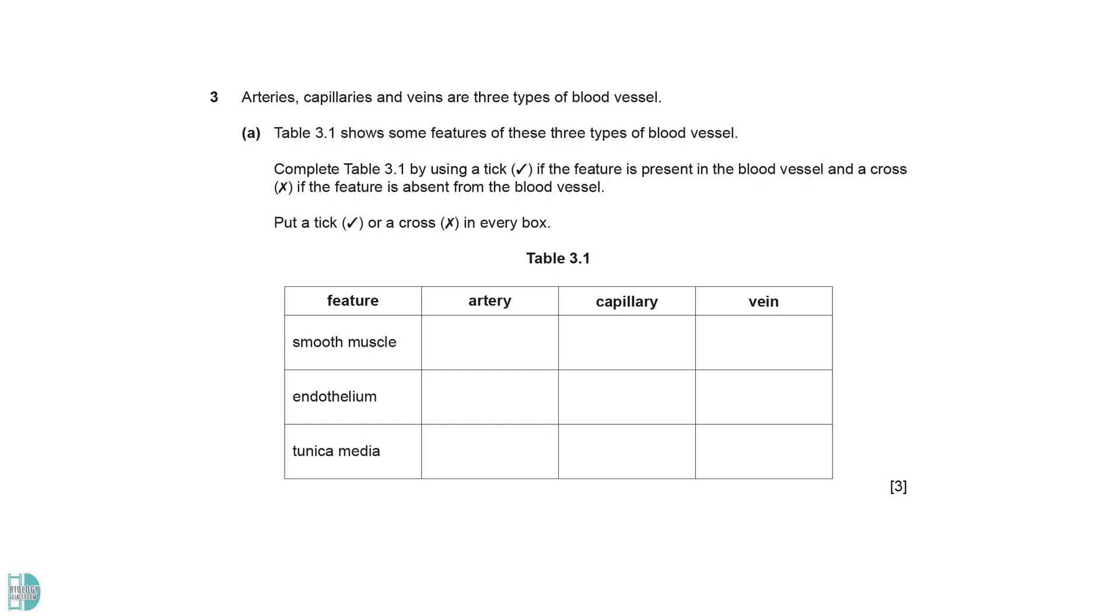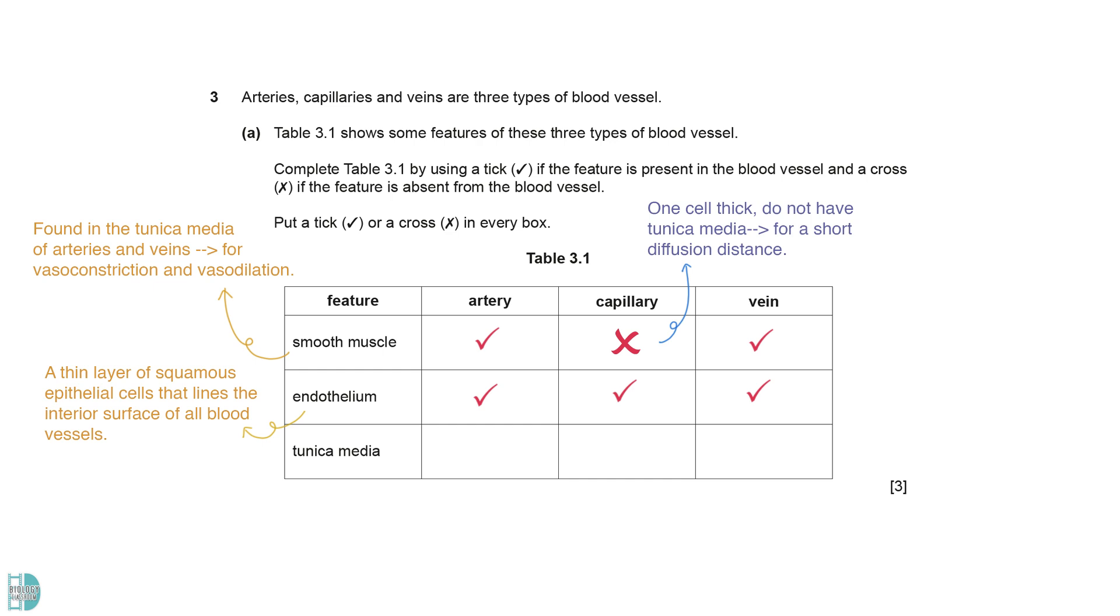3A wants you to complete the table to show the features of different blood vessels. Smooth muscle is found in the tunica media of both arteries and veins. This allows them to have vasoconstriction and vasodilation. Capillaries are only one cell thick, so they do not have this layer. This is important for a short diffusion distance. The endothelium is a thin layer of squamous epithelial cells that lines the interior surface of all blood vessels. The tunica media is the middle layer of a blood vessel's wall, composed of smooth muscle cells and elastic tissue. Capillaries only have a single layer of endothelium.